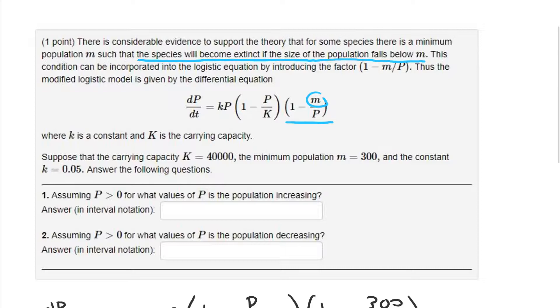And what we're trying to find for these specific values of K, the carrying capacity, the minimum population, and the constant, we want to figure out for what values of P, the population that's positive, will the population be increasing? And for what values of P will it be decreasing?